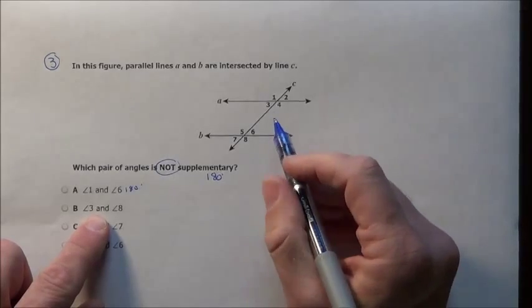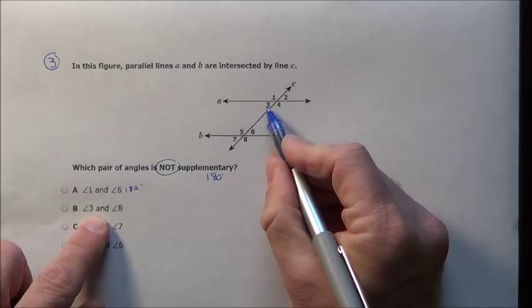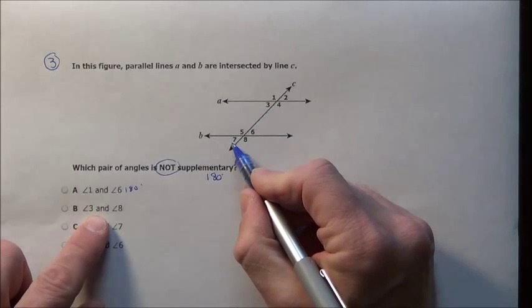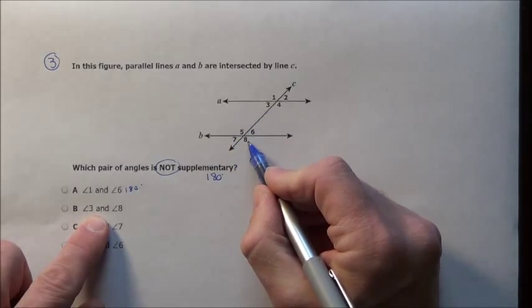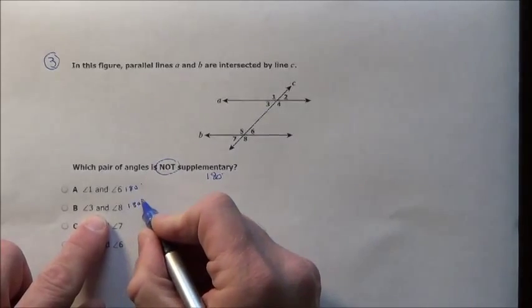We're trying to find the ones that don't. Now for angles 3 and 8, I know 3 is the same as 7, and 7 and 8 add up to 180, so 3 and 8 must also add up to 180.